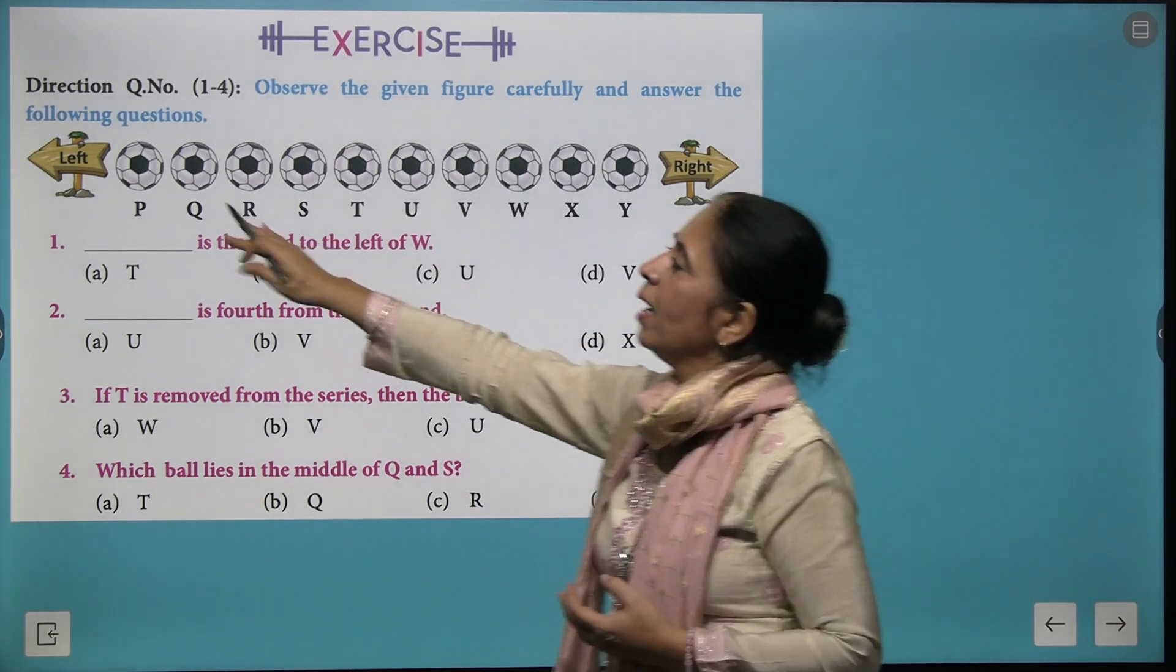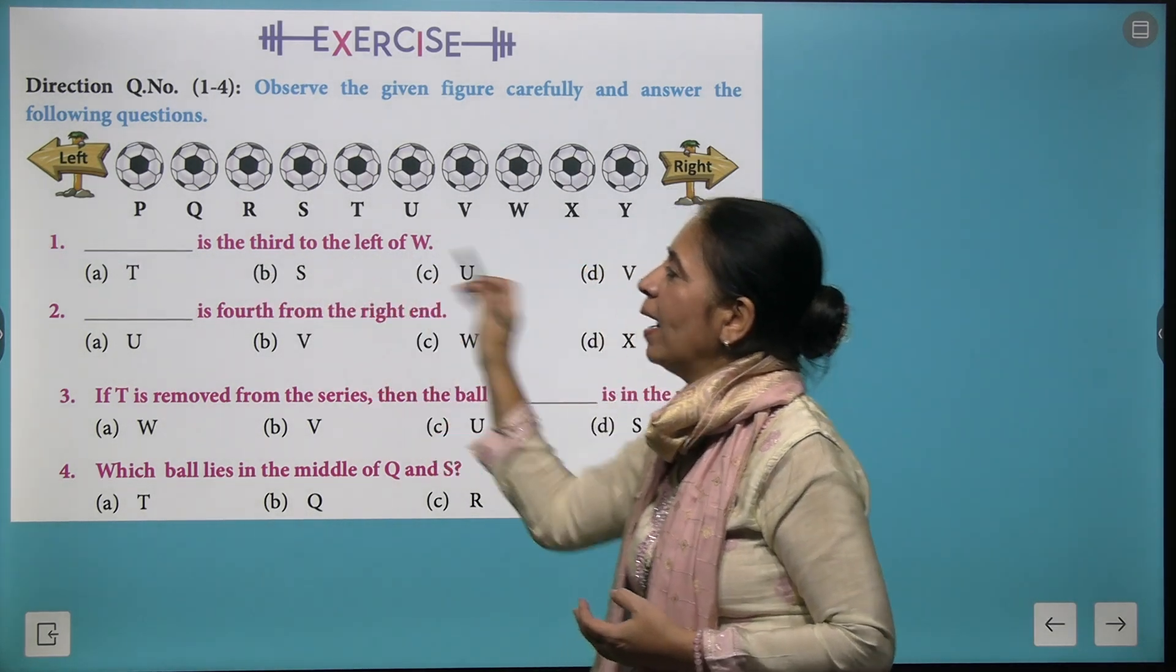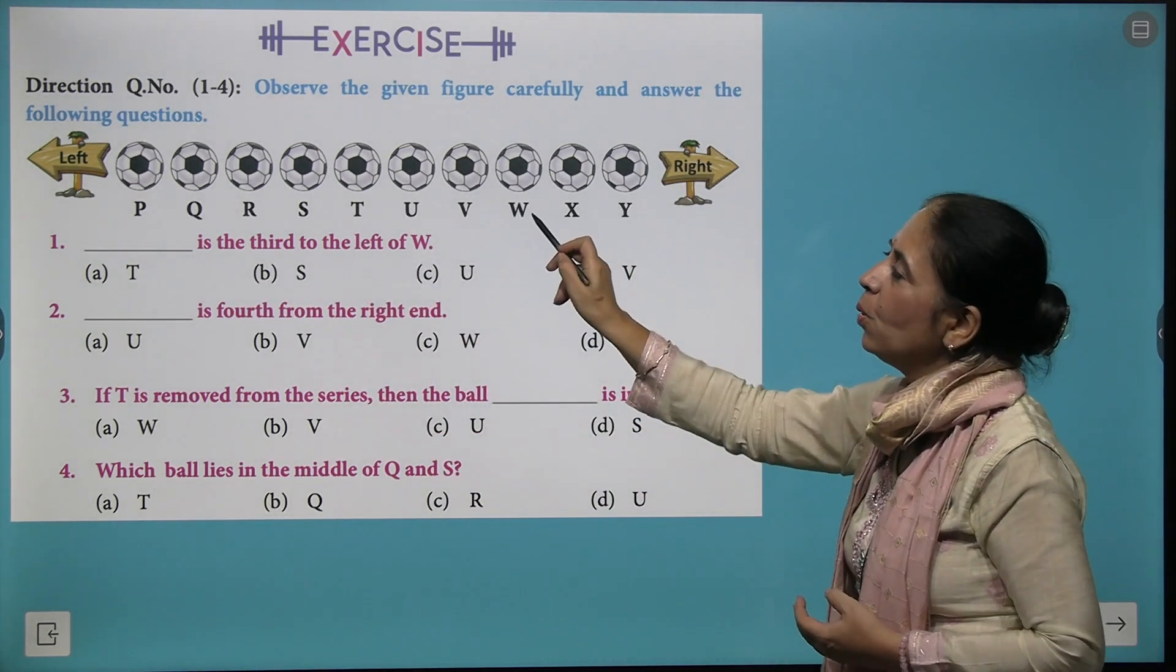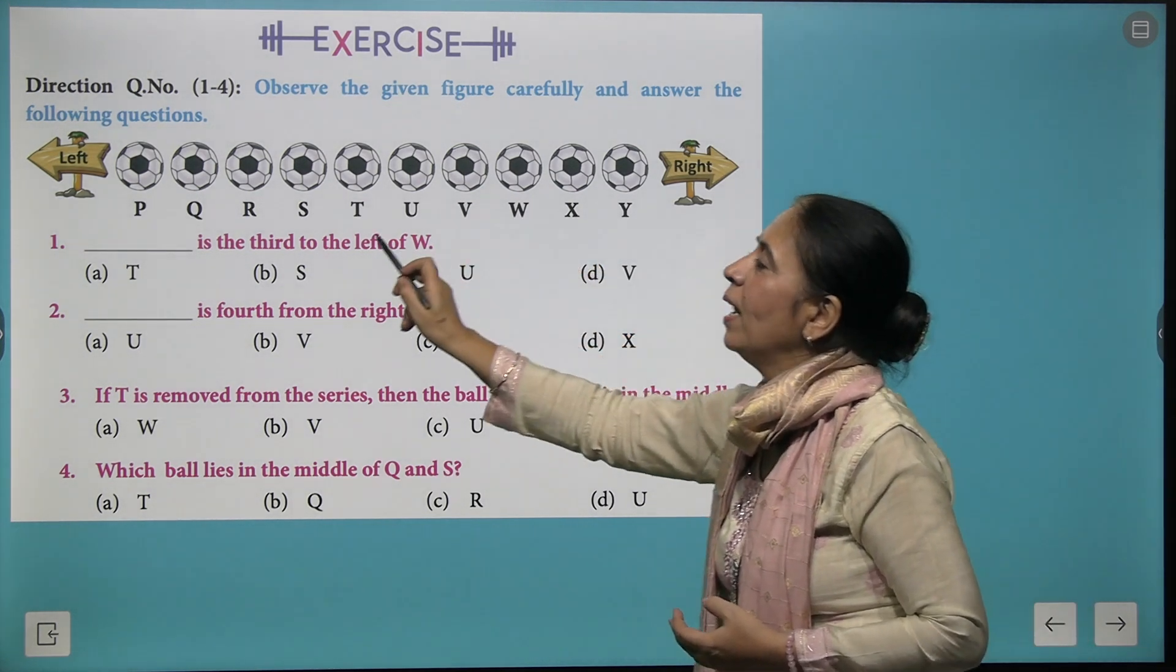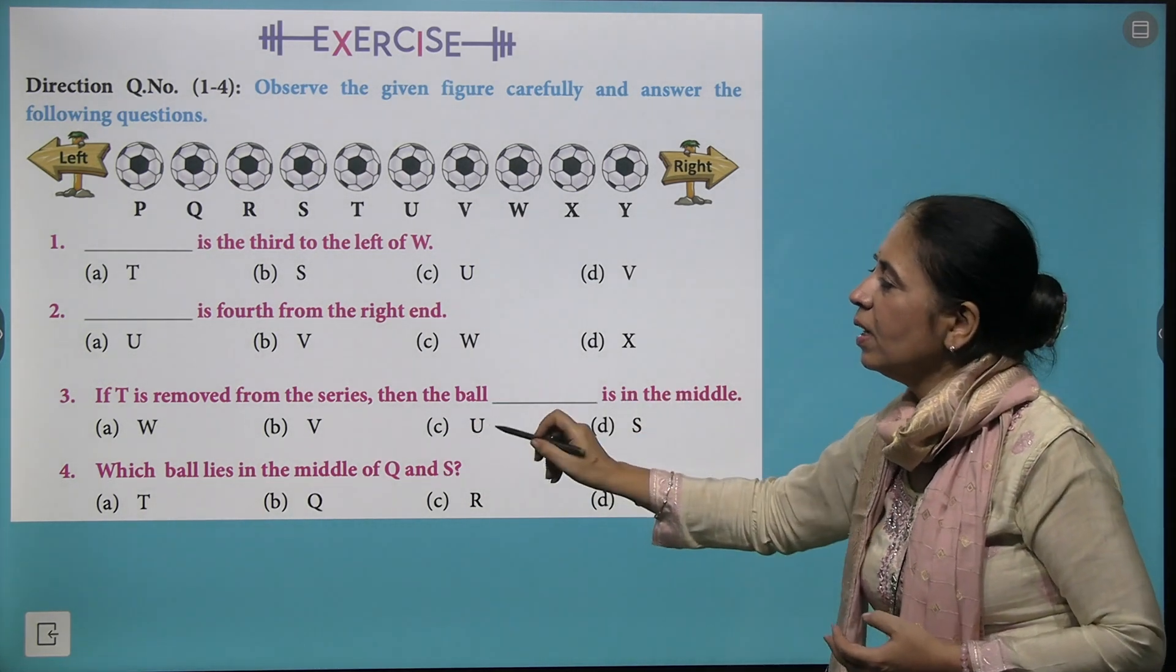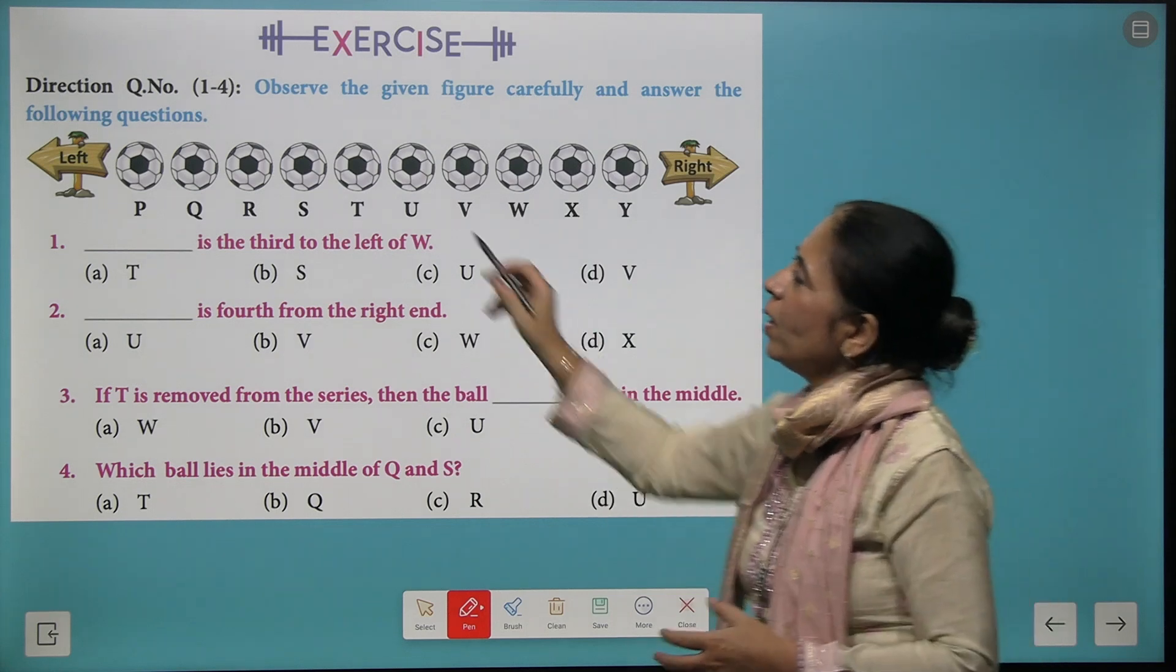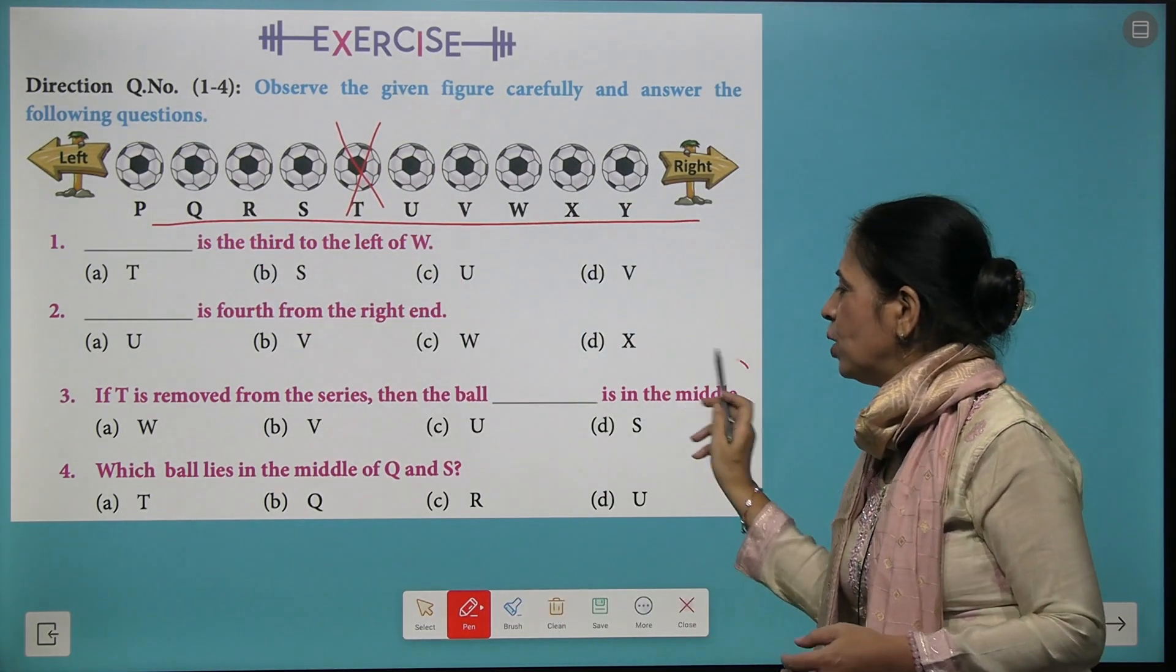Here we have certain balls placed and you have to find which is to the right or left of W. We start from W and find the third to the left of W, similarly fourth from the right hand. Further, if T is removed from the series, we remove T.